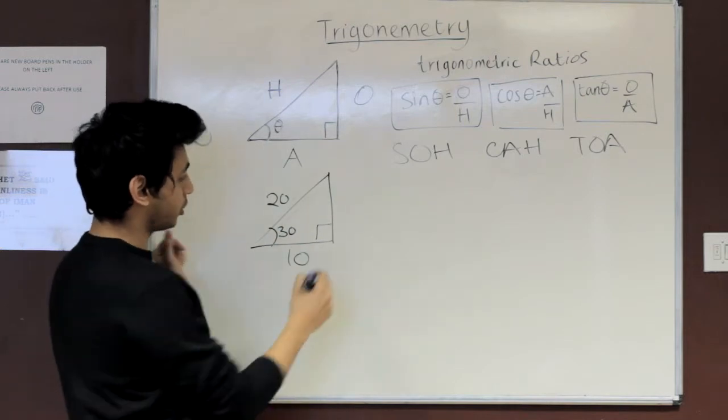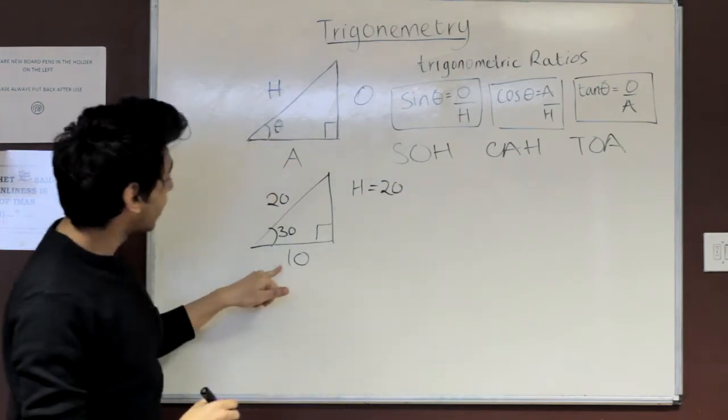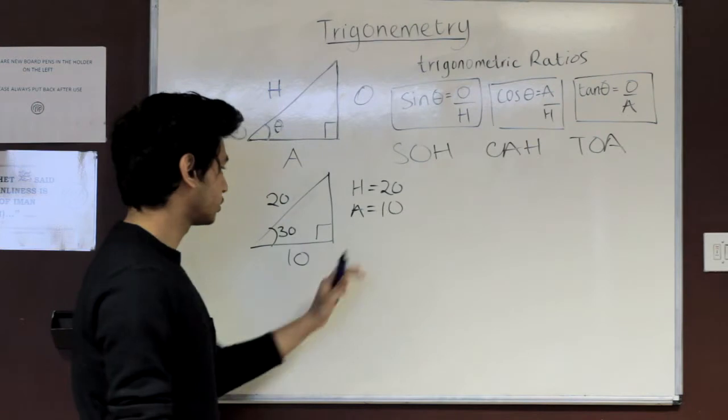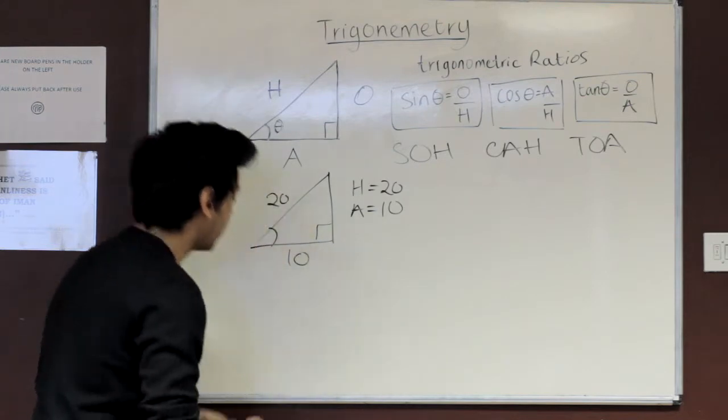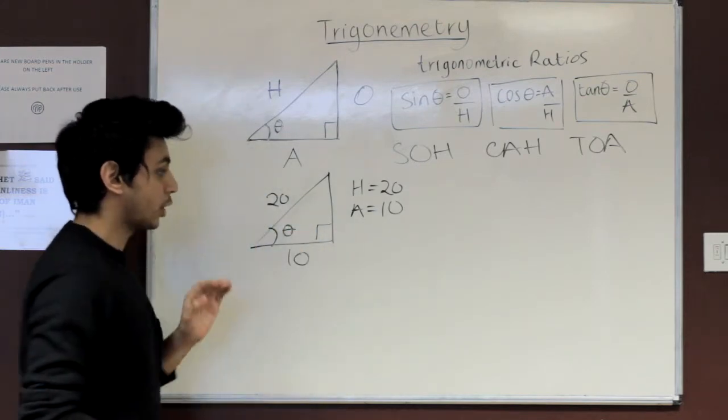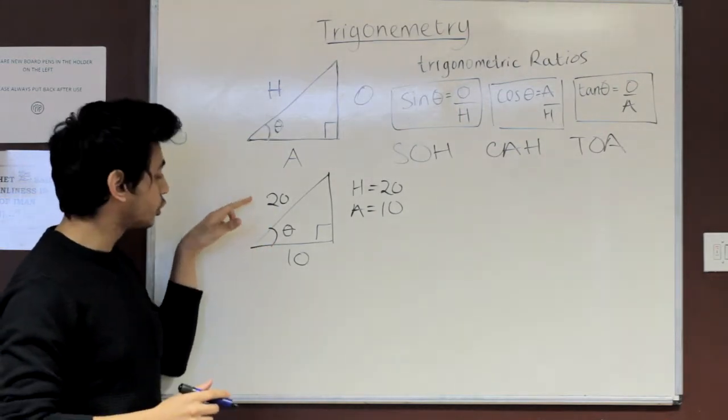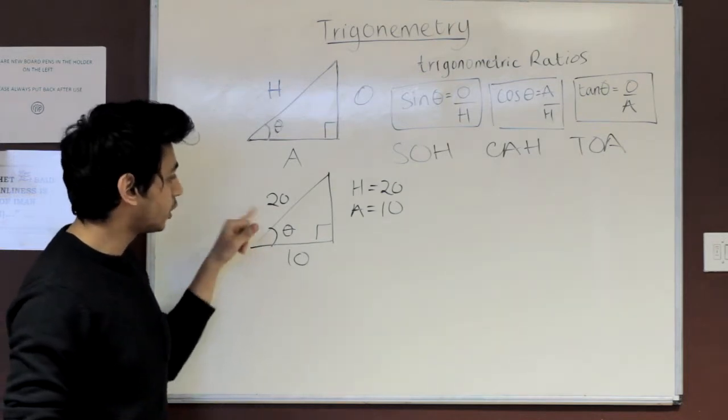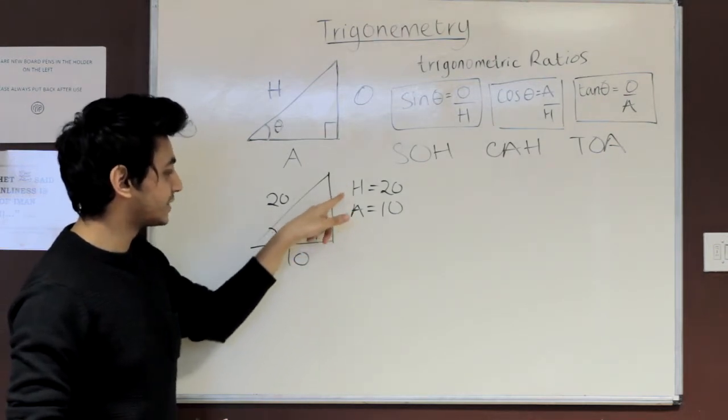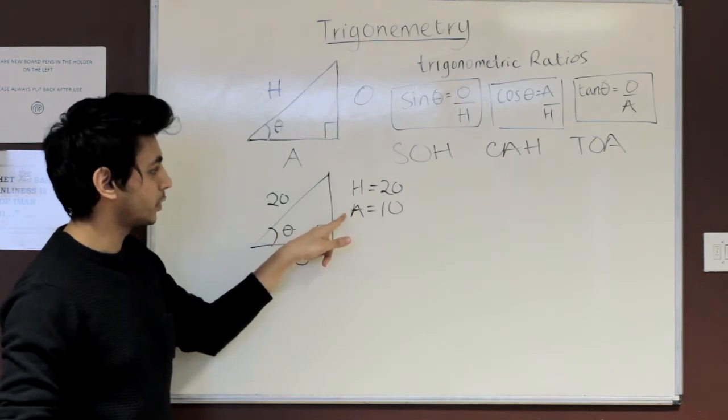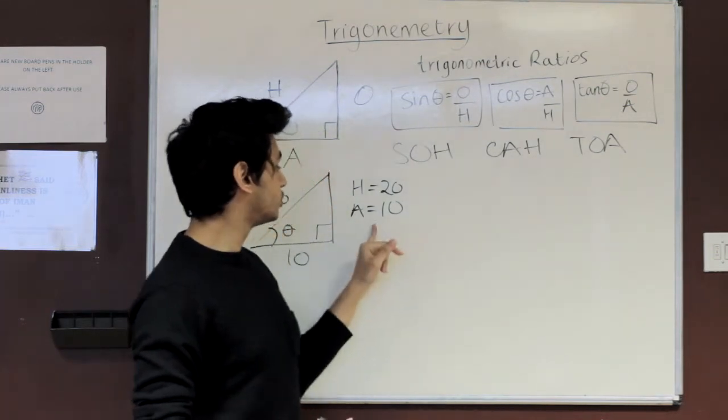So if we're given this example where our hypotenuse, if we compare the two, our hypotenuse is 20 and our adjacent is 10. So our hypotenuse is 20 and our adjacent is 10. And suppose that we're not given this angle theta, so we label this as theta. A question may ask you to work out the angle of theta. When they ask you to work out this angle, you're going to have to use what you already know, what they've already given you to do this. So we know our hypotenuse is 20 and our adjacent is 10. If you look at the two variables or the two letters that have been given to us, that's H and A.